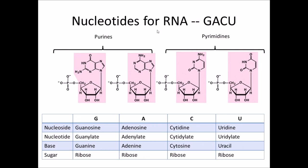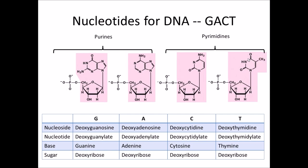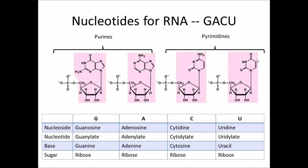Here are the nucleotides for RNA. The difference in the bases is that there is a uracil instead of thymine. The only difference between thymine and uracil is this methyl group here. The things that do the base pairing — the nitrogen and the oxygen — are exactly the same. The difference in the sugar ribose versus deoxyribose is this oxygen here.